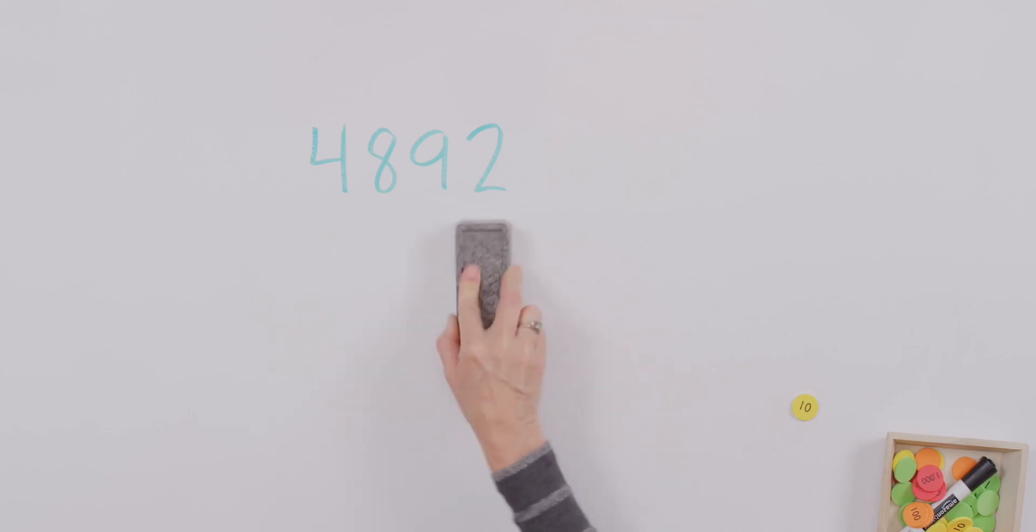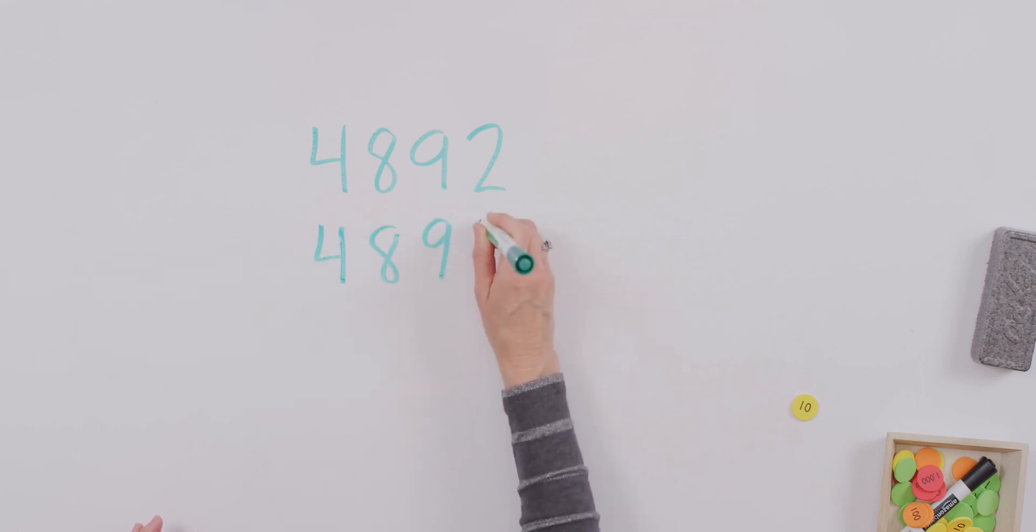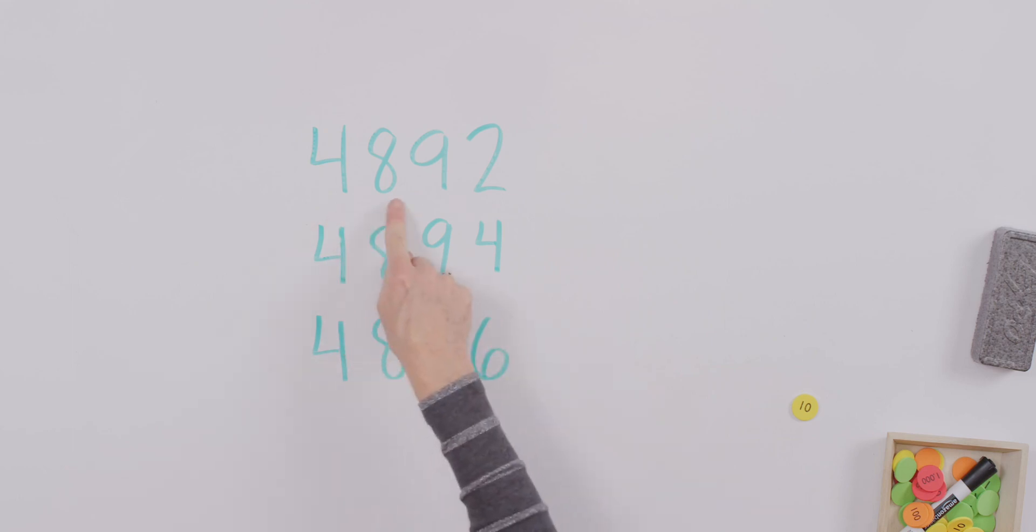Alrighty, this one you're going to get lickety-split. Oh, I'm going to make it trickier for you. Let's see, what am I adding? Now, I'm going to do another one for you. What did I add? Do you know? 4,892, 4,894, 4,896. I'm working in the ones column, but I didn't add one, did I?